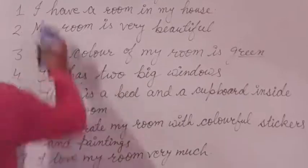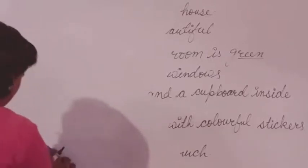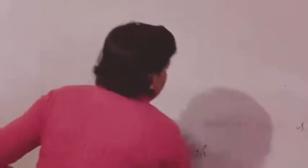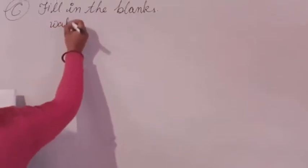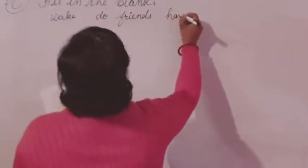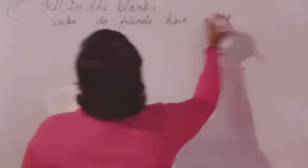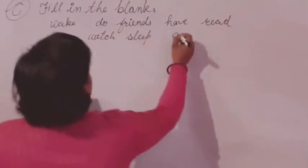Now come to the third exercise of this composition. It is about filling in the blanks using a few words given in a box. The words are: wake, do, friends, have, read, eat, watch, sleep, go, and act. These words are given as hints above each sentence.